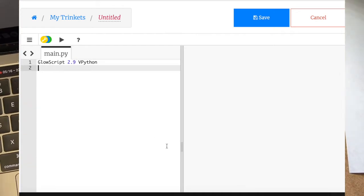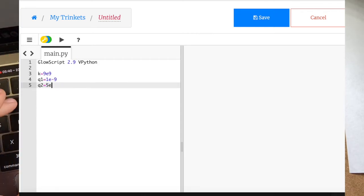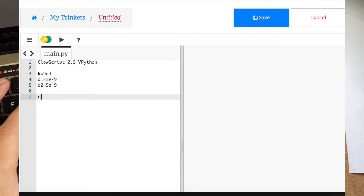Okay. So let's enter in K equals 9 times 10 to the 9th. Q1 is going to be equal to, what did I say, 5E negative 9, Q2 is equal to, no, Q1 was 1 times 10 to the negative 9th. And this is 5 times 10 to the negative 9th. Okay. Now, let's do this the first way.